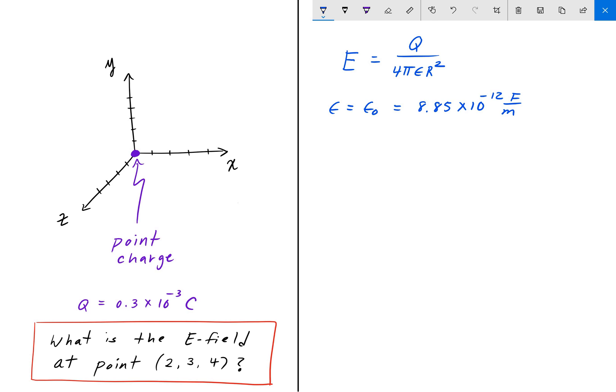And the way we define R is using the Euclidean distance. So R is the square root of 2 squared plus 3 squared plus 4 squared. And that'll give us the distance to that point from the origin (2, 3, 4).